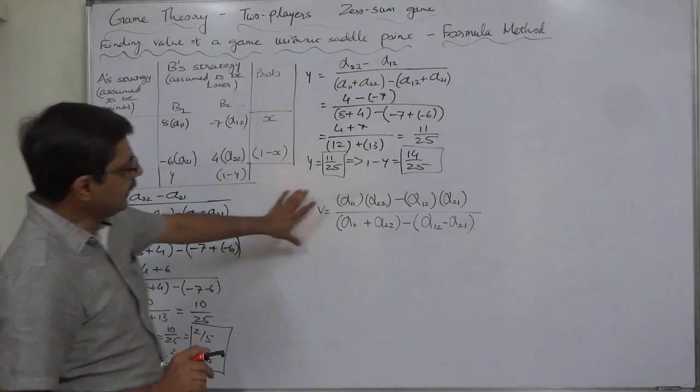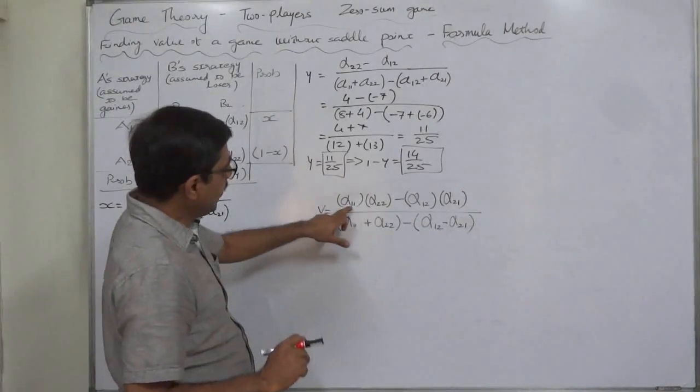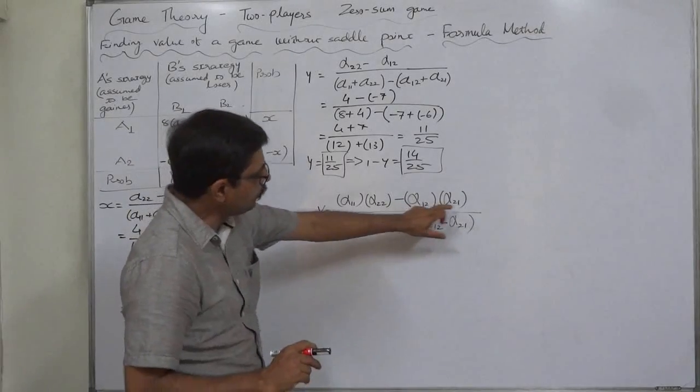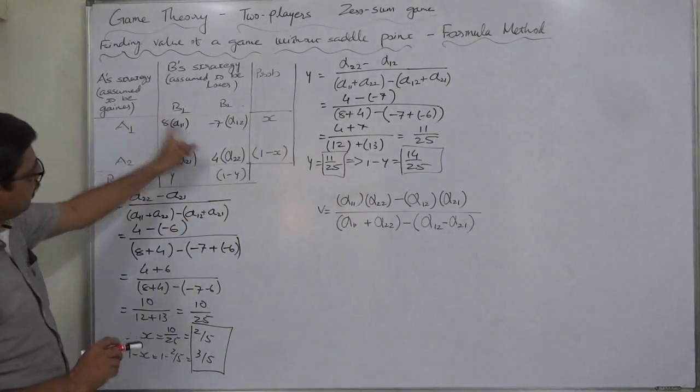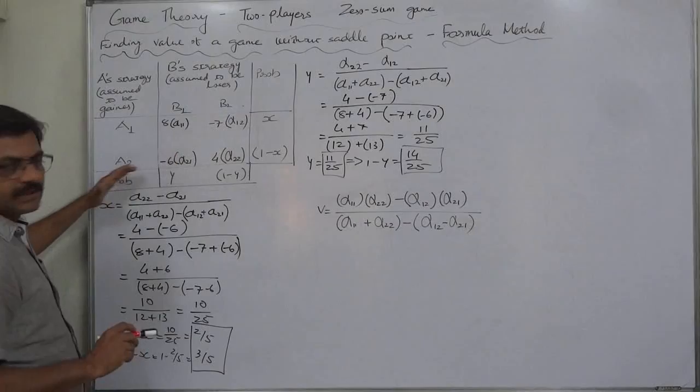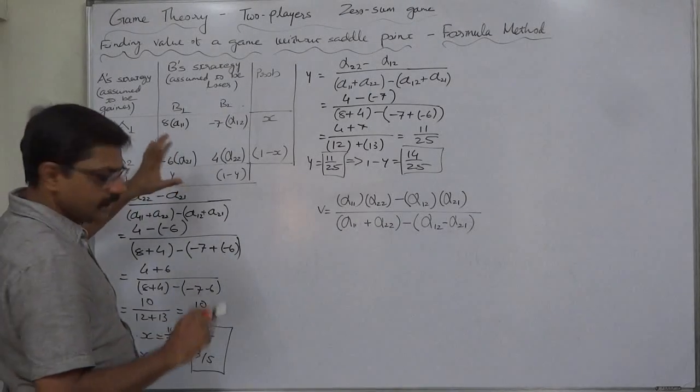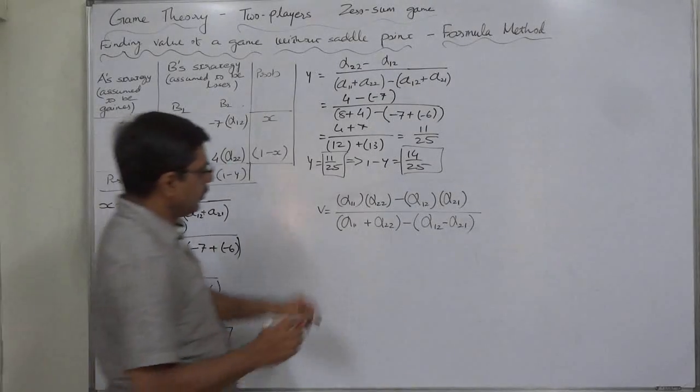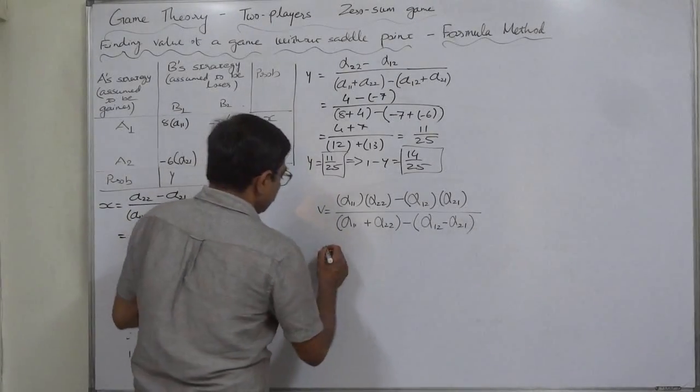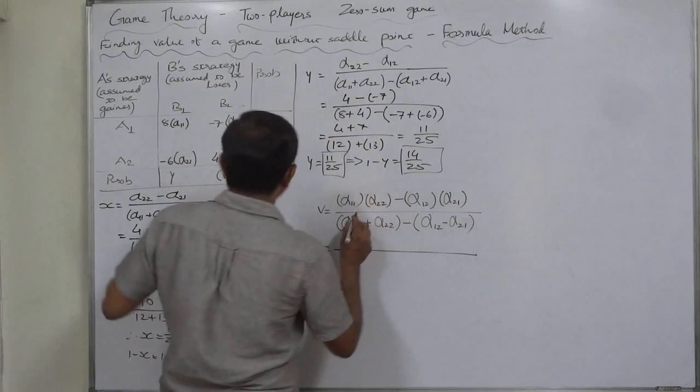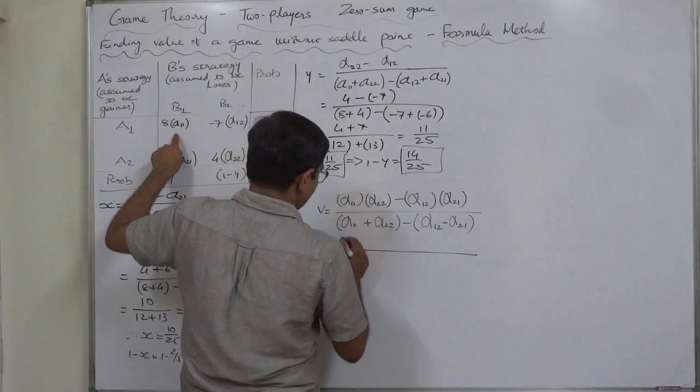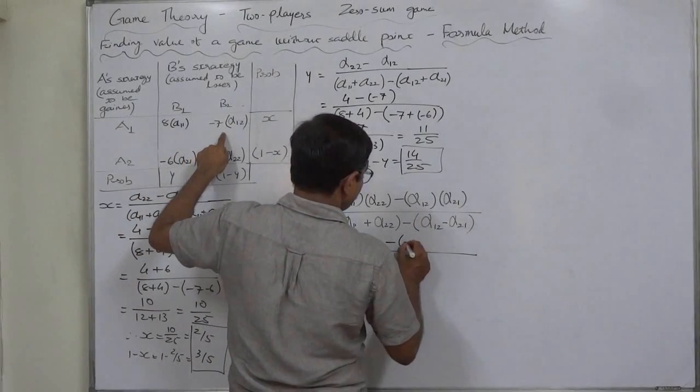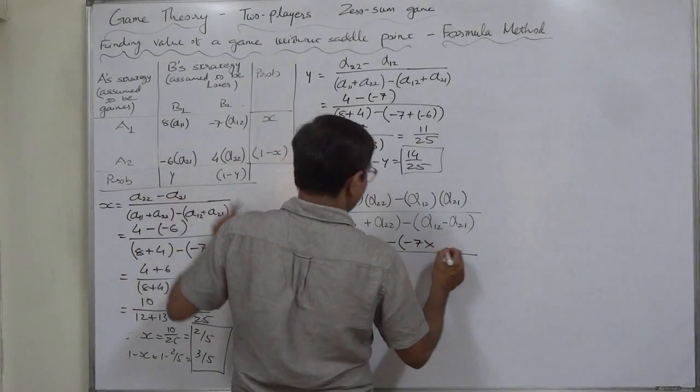And the value of gain will be, the formula is alpha 1 1 into alpha 2 2, this is multiplication minus alpha 1 2 into alpha 2 1. This is something like cross multiplication, cross difference of multiplications. Let us substitute the values alpha 1 1 into alpha 2 2, 8 into 4 minus alpha 1 2 minus 7 into alpha 2 1 minus 6.